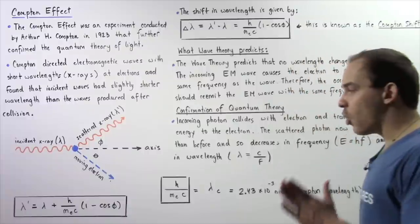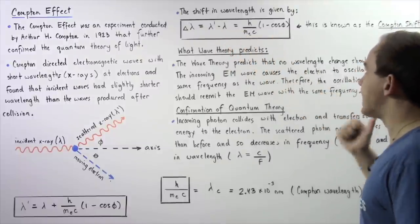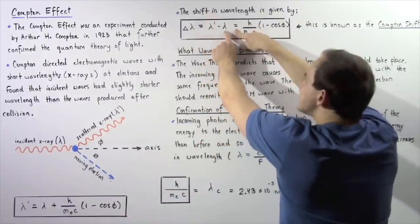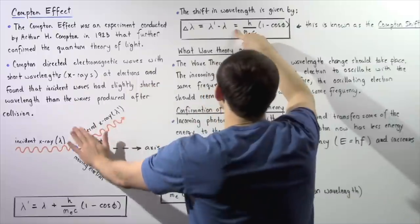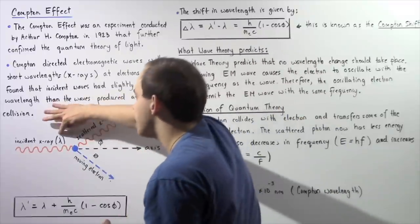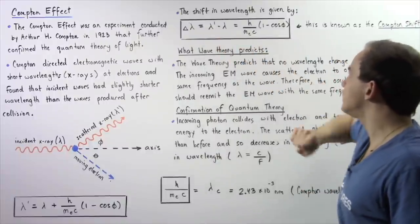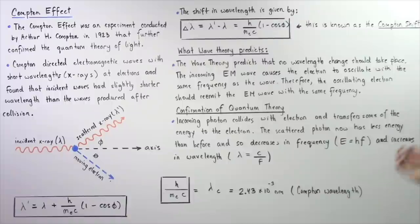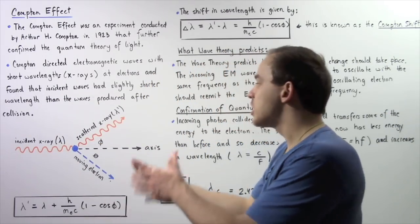Using this equation, we can also determine a quantity known as the Compton shift. The shift in wavelength is given by the change in wavelength, which is simply lambda prime minus lambda. Lambda prime is placed first because it represents the larger wavelength quantity. When the collision takes place, the wavelength of the scattered X-ray is increased compared to the initial wavelength of the incident X-ray. This quantity became known as the Compton shift — it represents the shift or change in wavelength that takes place when the electromagnetic wave hits the electron.